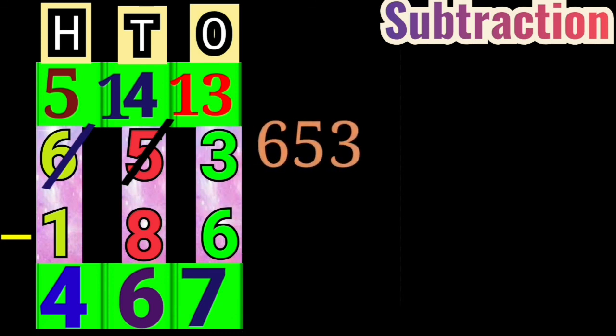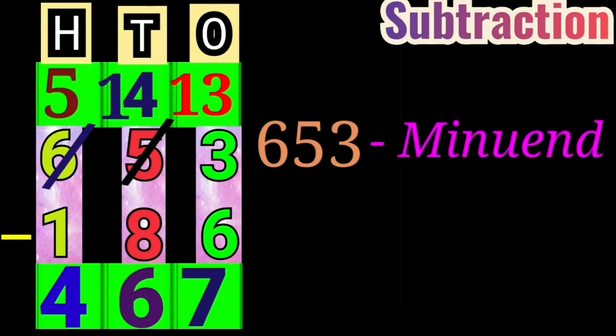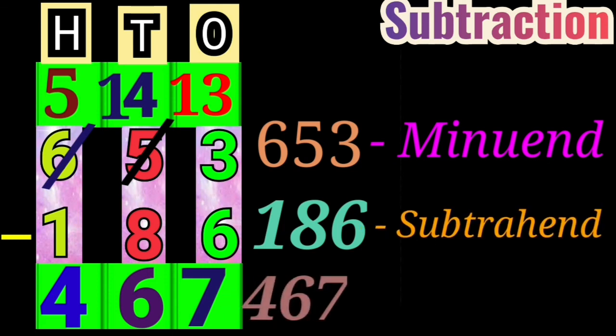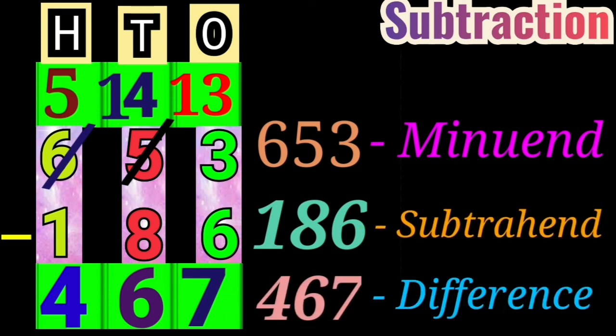The number from which another is to be subtracted is known as minuend. The number to be subtracted from another is known as subtrahend. And, the answer is known as difference.